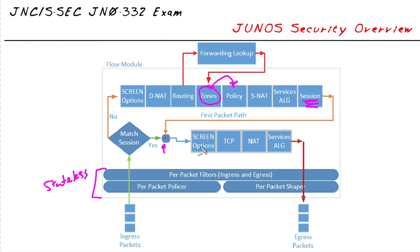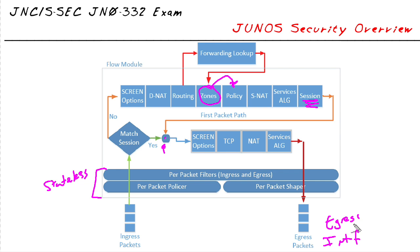Once the packet goes through everything that my policies have determined, it's sent back out. Again, I can have output filters — which are stateless — and output shapers to get the packet out to the interface. So my egress interface is here, and my ingress interface is over here.